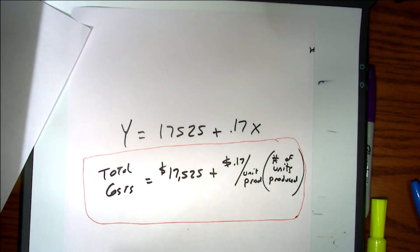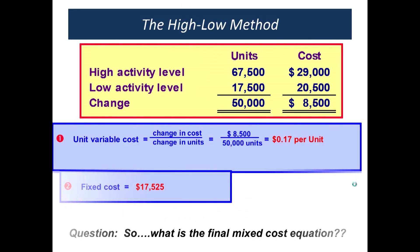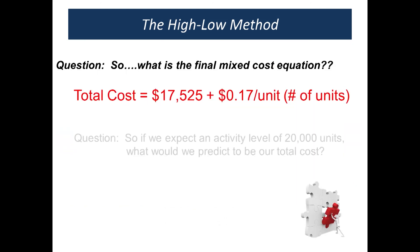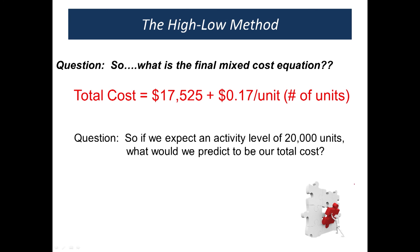Now what we can do is, once we have that equation, let's say we expect an activity level of 20,000 units — what would we expect our total costs to be? We plug it into the equation and we get $20,925. That's why we want that equation. As managers planning and controlling our business, taking costs into account is a huge part of running a business.